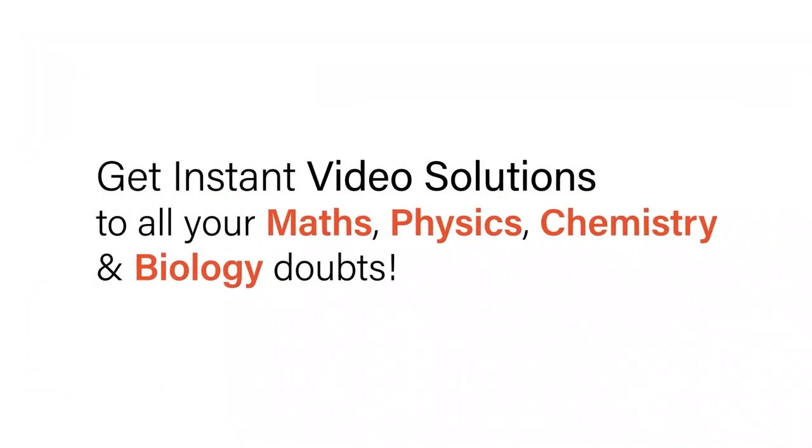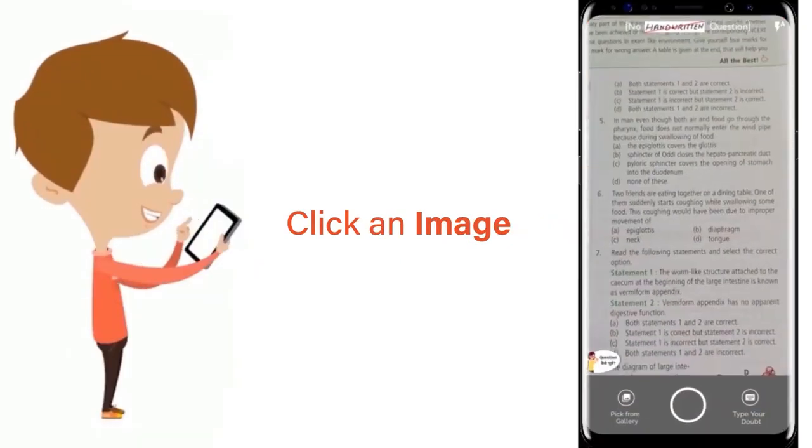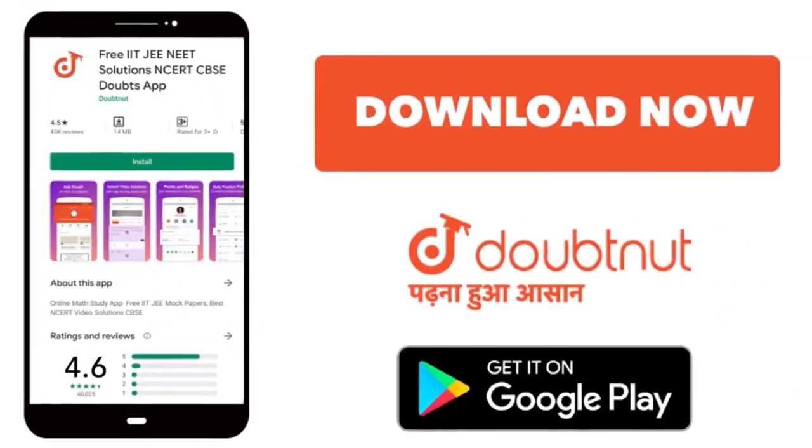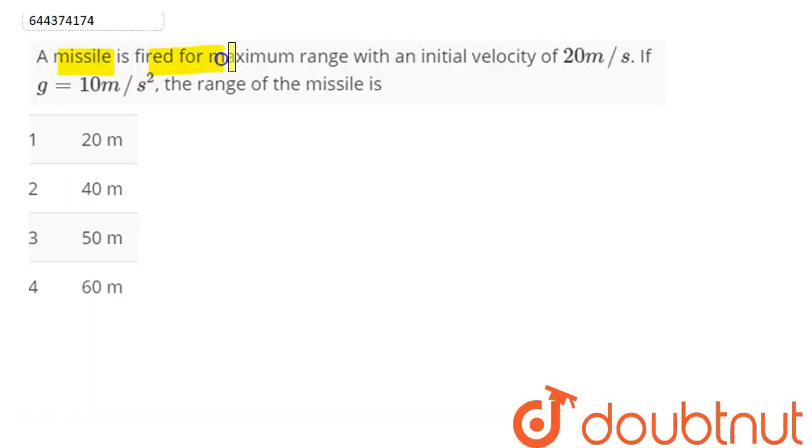With Doubtnet, get instant video solutions to all your maths, physics, chemistry, and biology doubts. Just click the image of the question, crop the question, and get instant video solution. Download Doubtnet app today. Question is: a missile is fired for maximum range with an initial velocity of 20 meters per second.